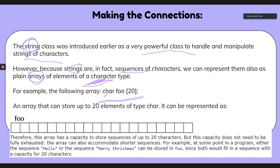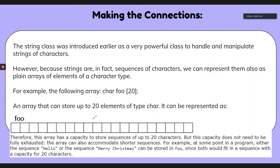Here we're defining a foo array made of only characters — everything within it is a char, with 20 characters total. This array has a capacity to store sequences up to 20 characters, but this capacity does not need to be fully exhausted, so we can have more space than we actually have characters for.